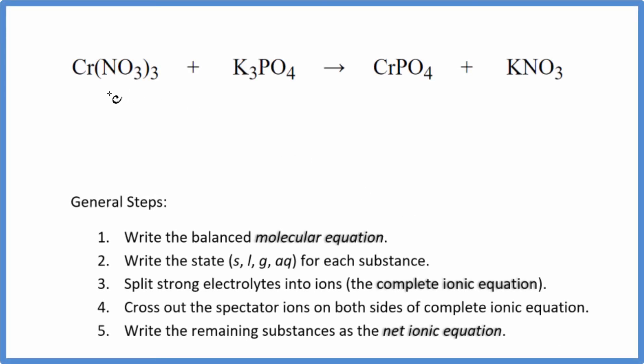In this video, we'll write the balanced net ionic equation for Cr(NO3)3 plus K3PO4. This is chromium(III) nitrate plus potassium phosphate.